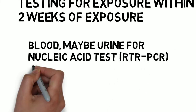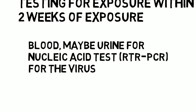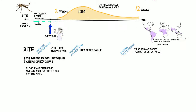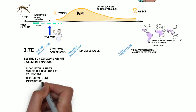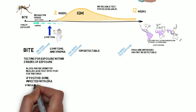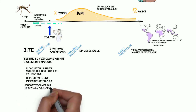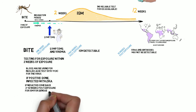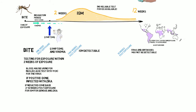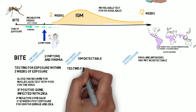That's the real-time reverse transcriptase PCR that detects viral RNA, or the actual presence of the virus. If it is positive, you're done testing. If negative, it will likely be recommended that the patient return in the 2- to 12-week window for serologic testing for Zika and dengue IgM. If positive or equivocal, it needs to be confirmed by the plaque reduction neutralization test. If negative for Zika, you're done. If positive, refer to maternal-fetal medicine for counseling and surveillance for microcephaly.